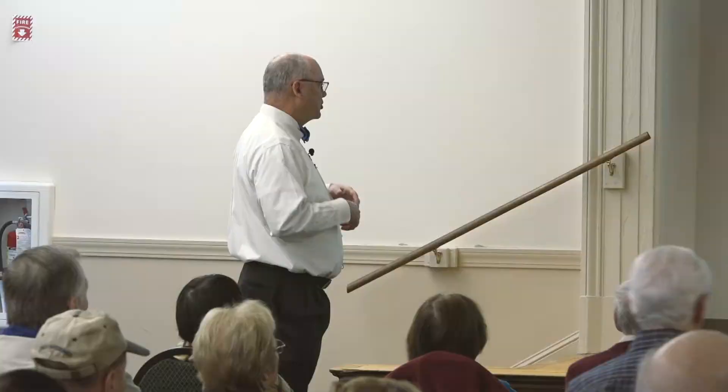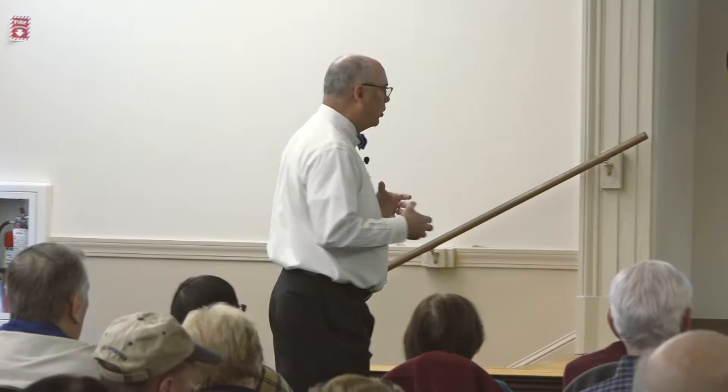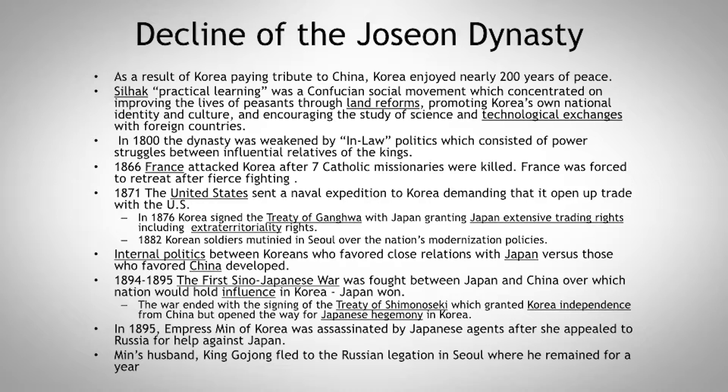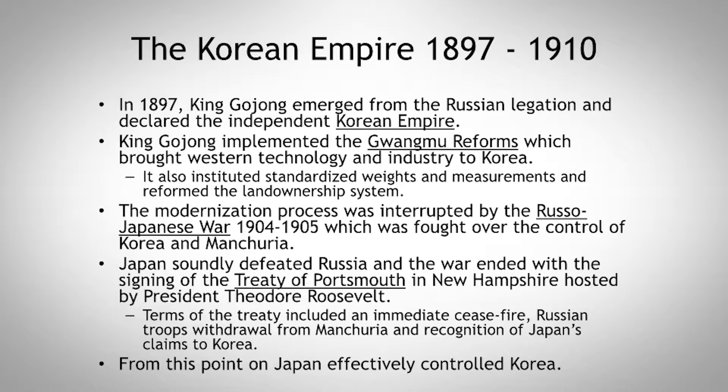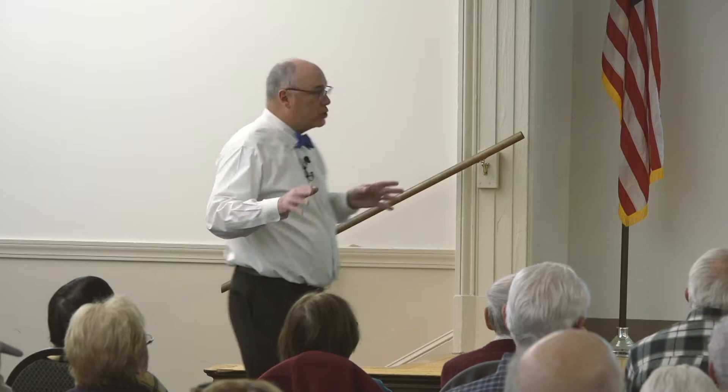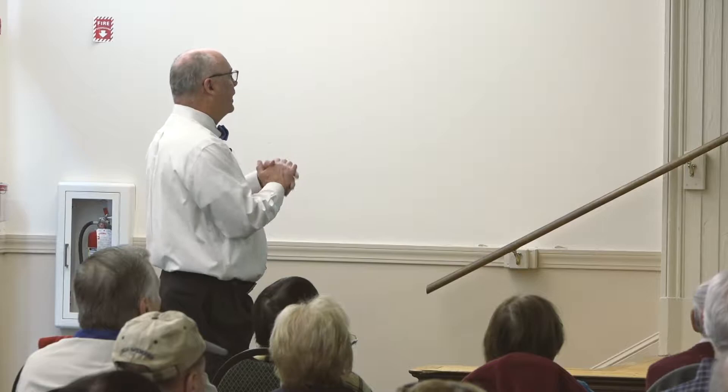We have three major powers battling it out over control of Korea. Min's husband, King Gojong, fled to the Russian legation — the embassy — in Seoul, where he remained for a year. Then the Korean Empire, 1897 to 1910: King Gojong emerged from the Russian legation and declared an independent Korean Empire. It's going to be short-lived, but it's one of the times when they were somewhat independent.